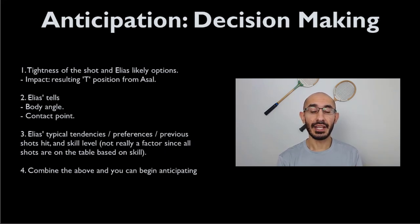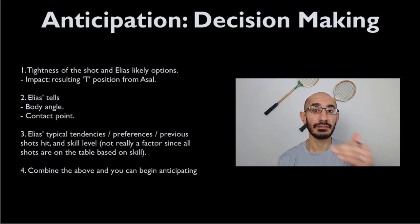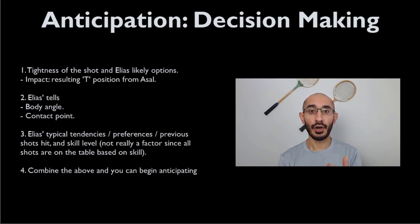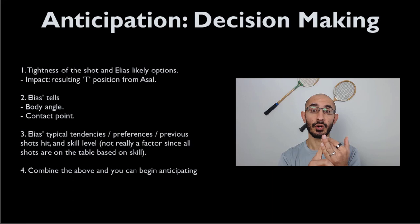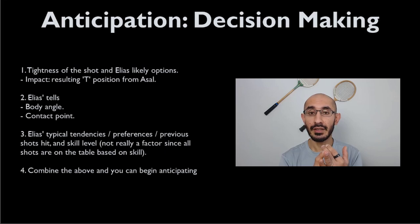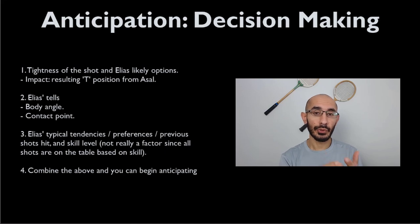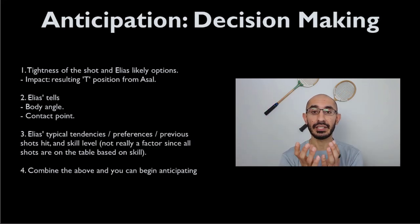If you study your opponent and understand their tendencies — whether they love to counterattack or just lift the ball and reset — and if you have a clear understanding of options available based on the tightness, depth, height, and speed of the shot you've hit, that's one piece of information to process. You also need to process your opponent's typical tendencies based on their skill level and the patterns they like to play. Personality comes into this too. Then you have to see their approach, body angle, contact point — and when you put all of that together, your brain creates a full picture.